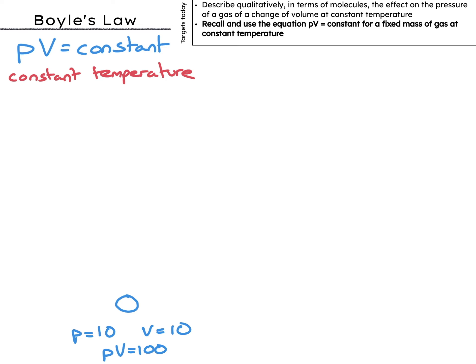If I increase the pressure to 20, the volume must drop to 5 since P times 5 equals 100. Okay, so PV is staying constant. If the volume goes up to 100, pressure must drop to 1. PV equals constant.